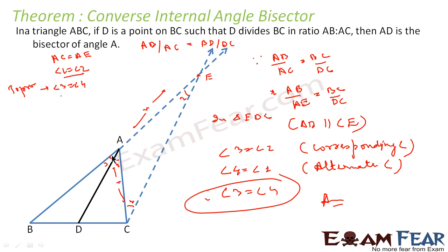What we have done here is very simple. We had triangle ABC and were told that D is such that AB by AC equals BD by DC. We constructed AE such that AE equals AC. We then applied the Thales theorem to prove that AD is parallel to CE. Since AD is parallel to CE, we proved that angle 4 equals angle 2 and angle 3 equals angle 1, and since angle 1 was equal to angle 2, we concluded that angle 3 equals angle 4.